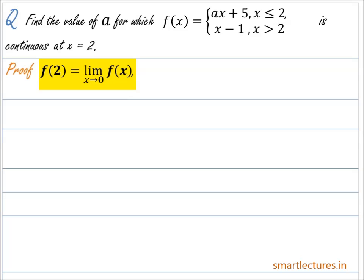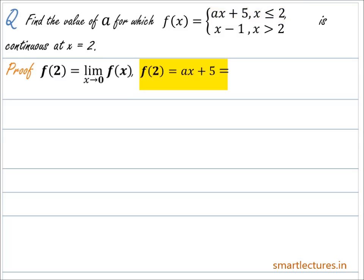What's the value of f(2)? As per the definition of the given function, if x is less than or equal to 2, then f(x) = ax + 5. That means f(2) = a×2 + 5, which is equal to 2a + 5. So f(2) = 2a + 5.